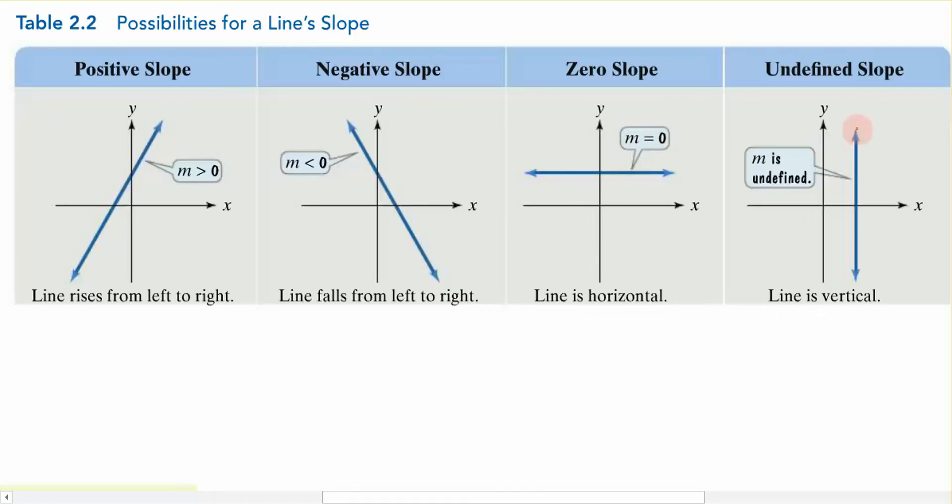And then finally, this is the picture of what happens when our x denominator becomes zero. The slope of this line, it's a vertical line, and we say that the slope of this vertical line is undefined. And that's because when we calculated the slope, we ended up with zero in the denominator. If that's the case, this is going to give us a vertical line like you see here. So we have these four possibilities for the slope of a line.